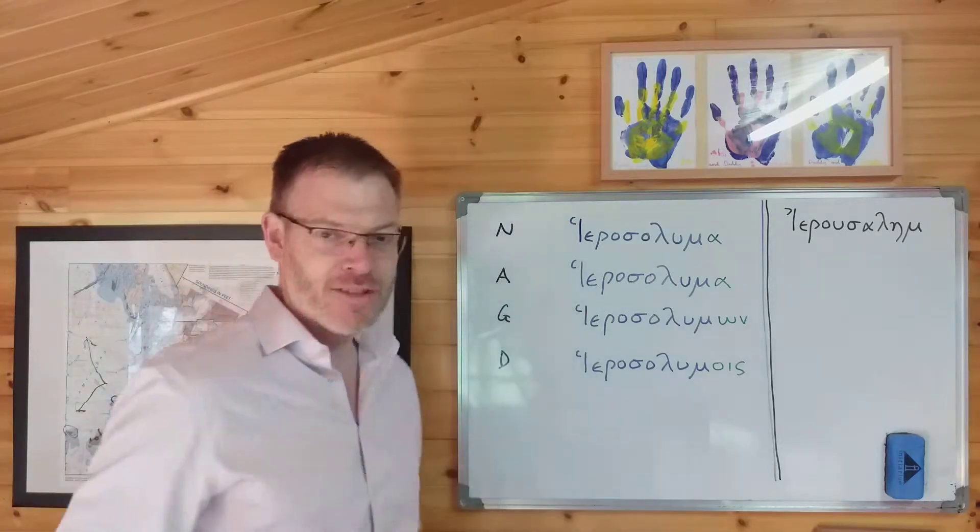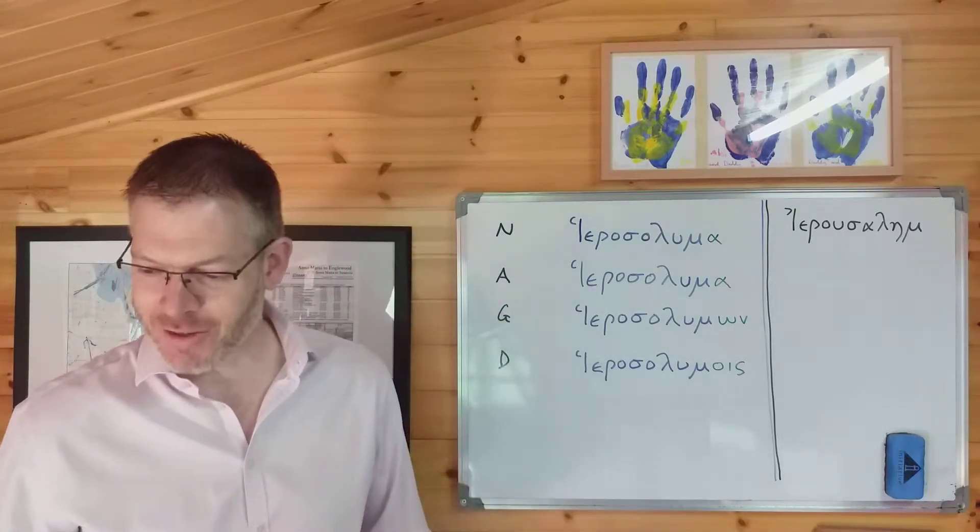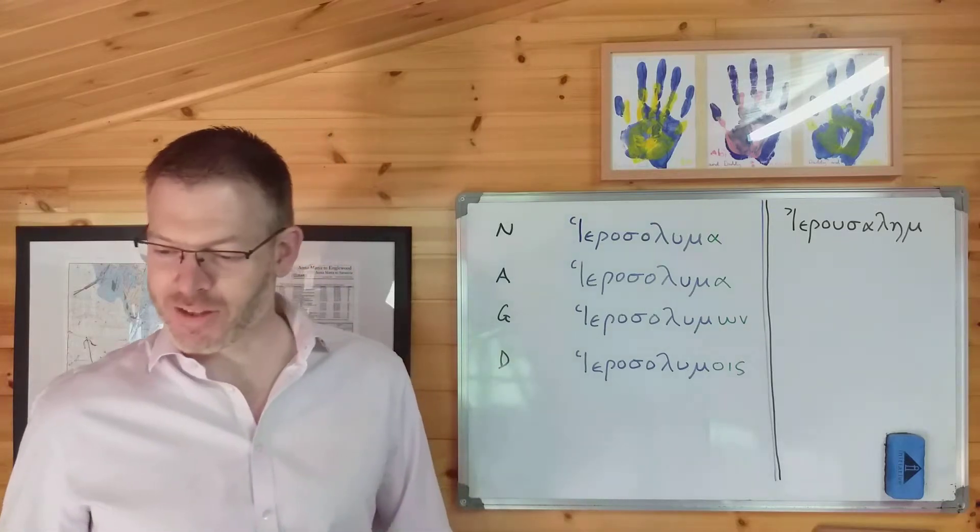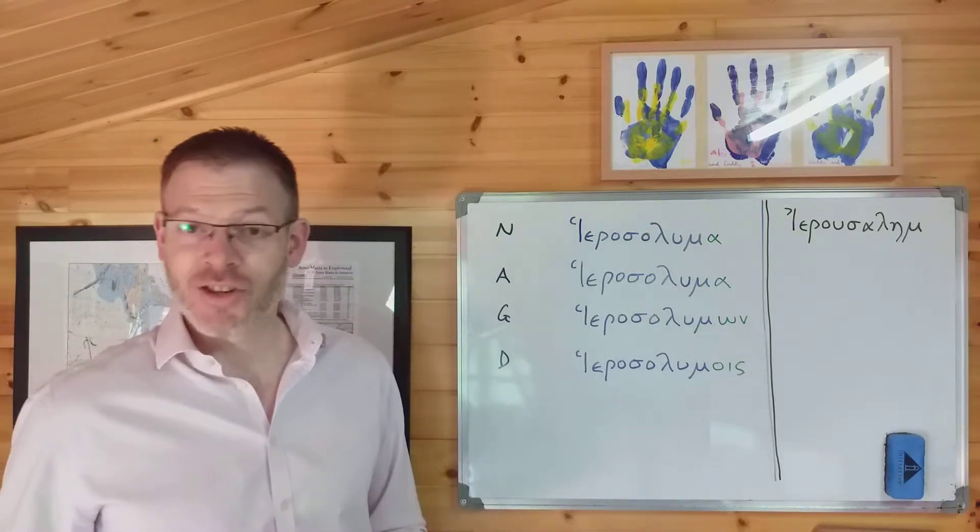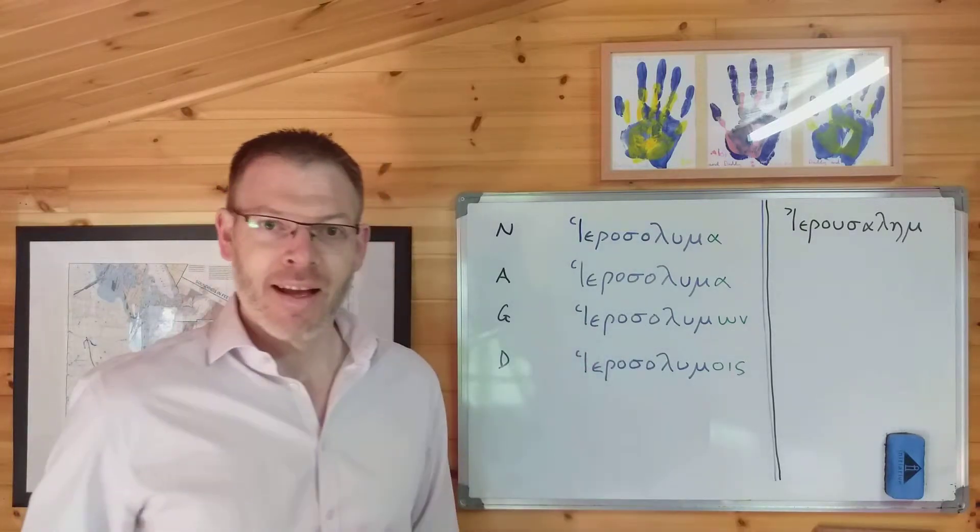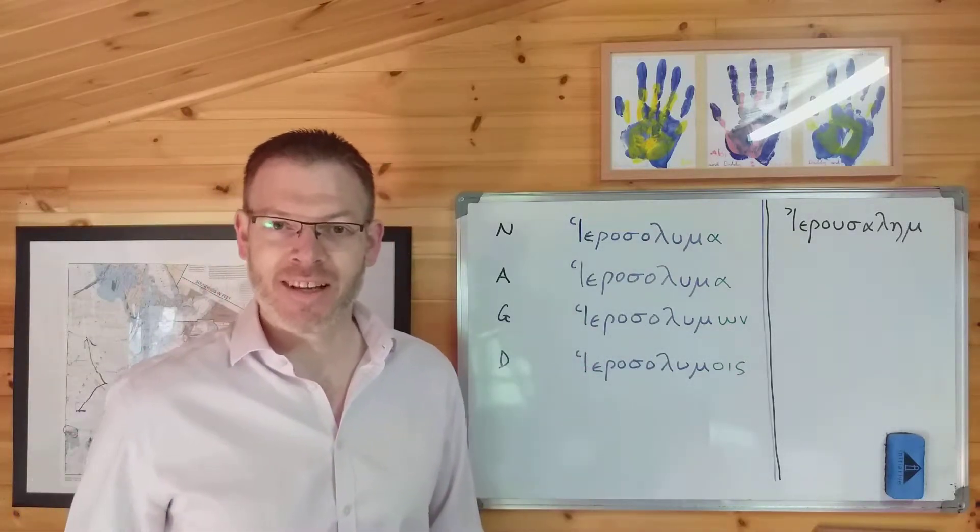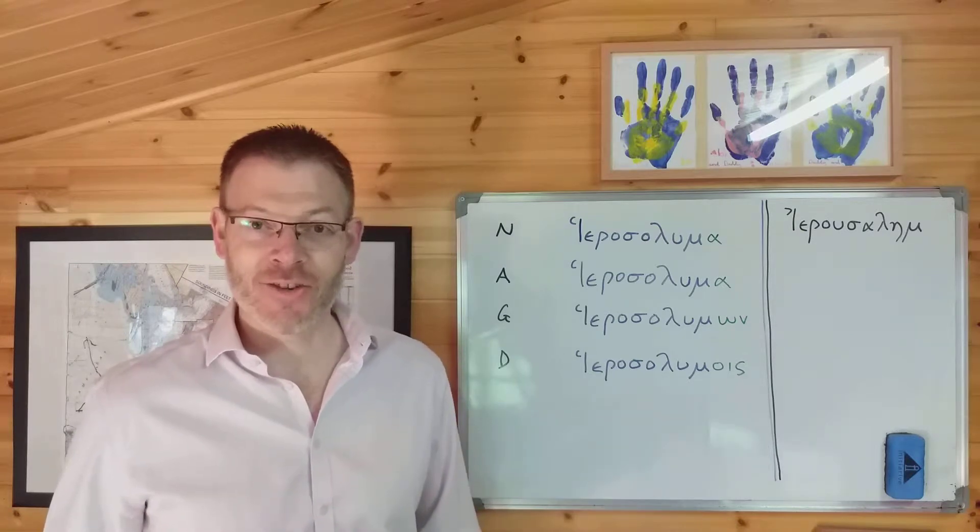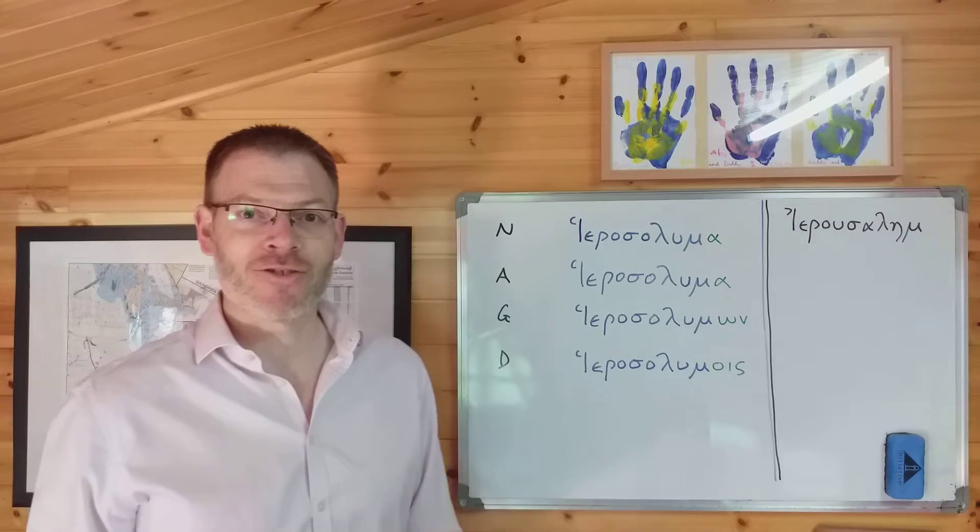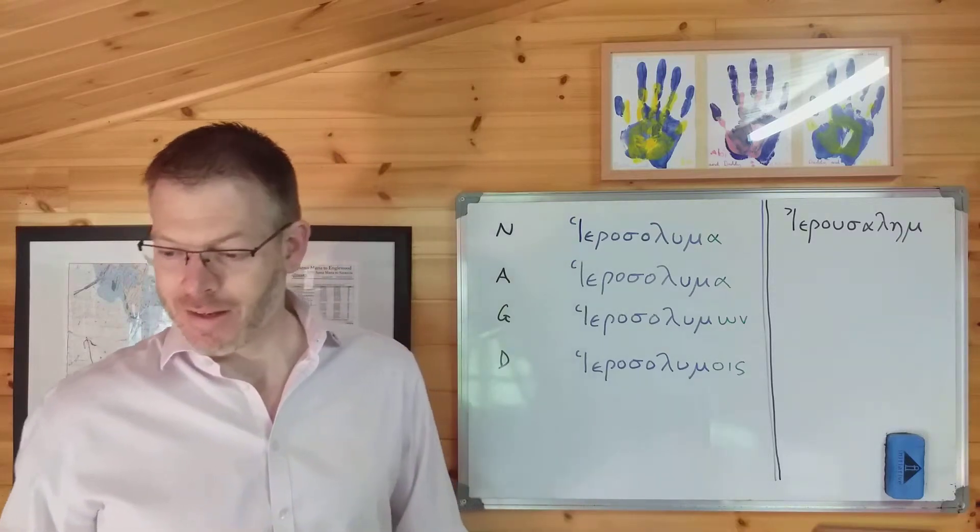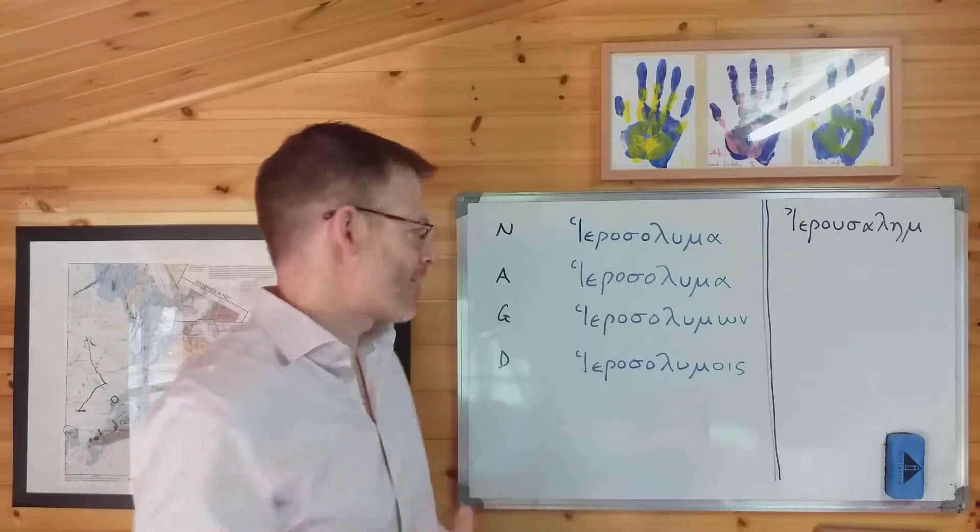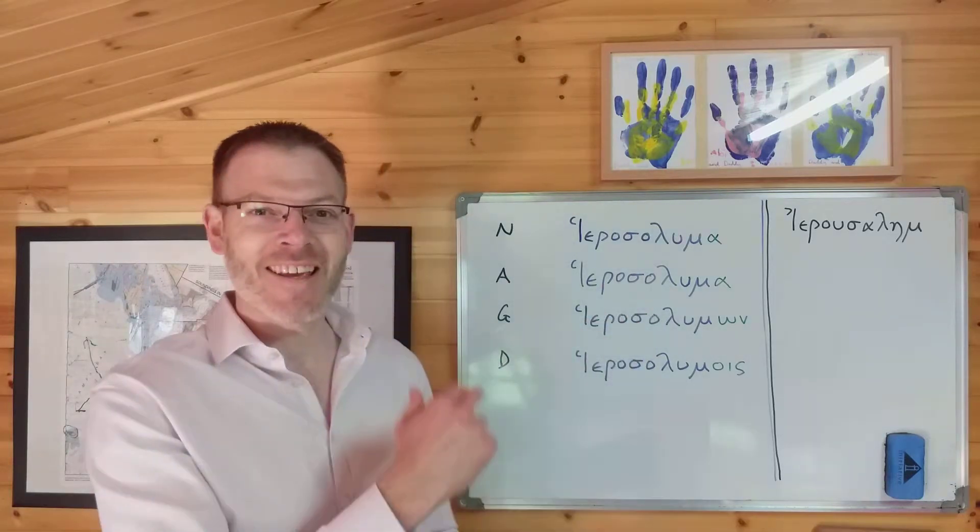If you want an example of the accusative case, you find that in Galatians chapter 2 verse 1, where Paul says that after 14 years he went up again to Jerusalem. That's ace hierosaluma, and ace, as you know, is a preposition that governs a noun in the accusative, so ace hierosaluma.